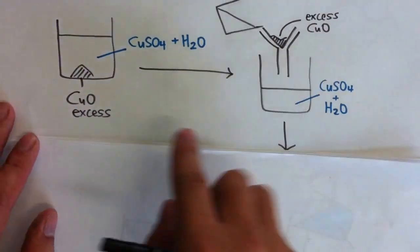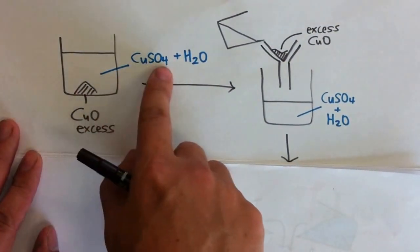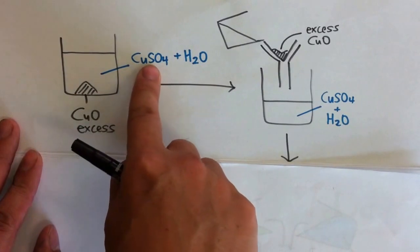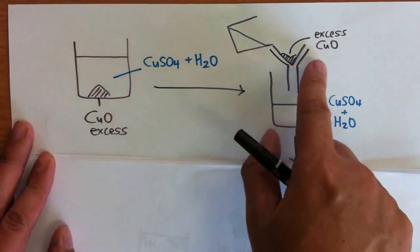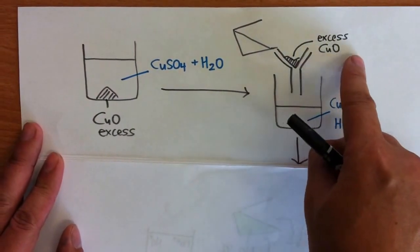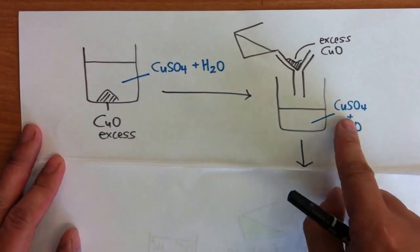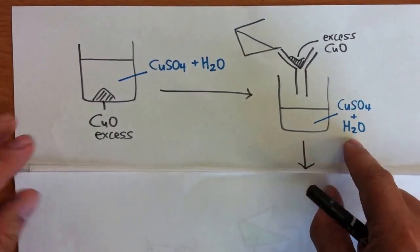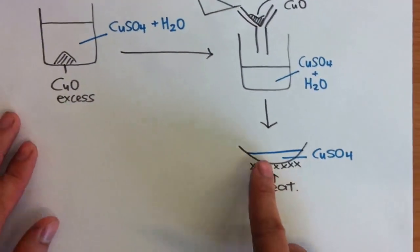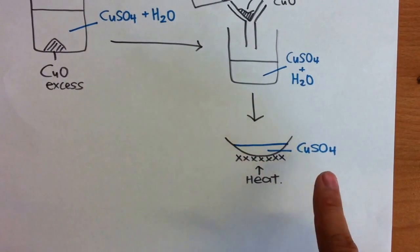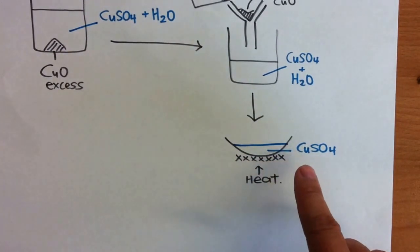So what you do next is take the mixture. This is what I want. This is my target. This is what I don't want. Do a filtration. Excess CuO is removed. What is left is CuSO4 plus water. And then take the filtrate, pour it into an evaporating dish and let it evaporate.